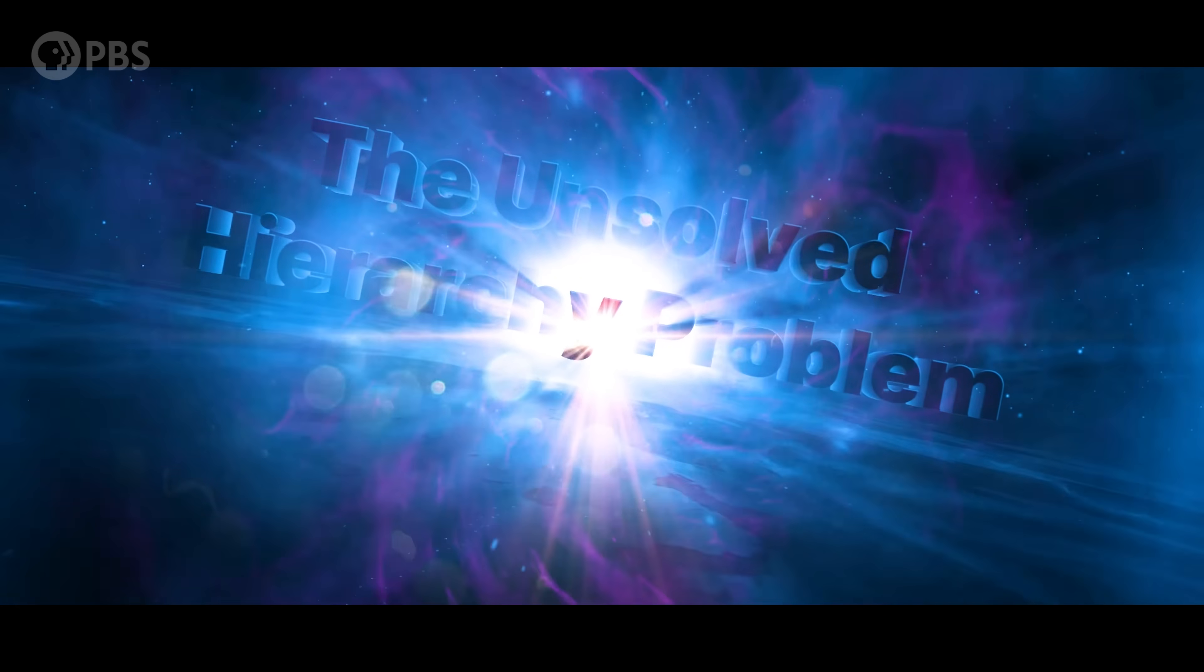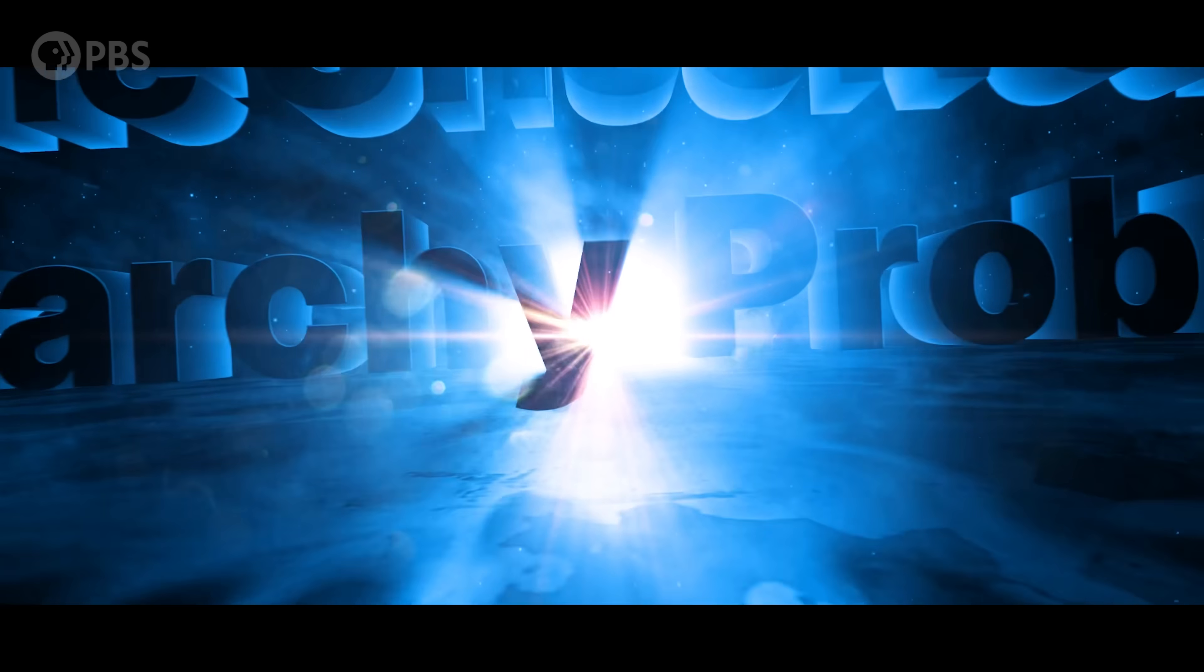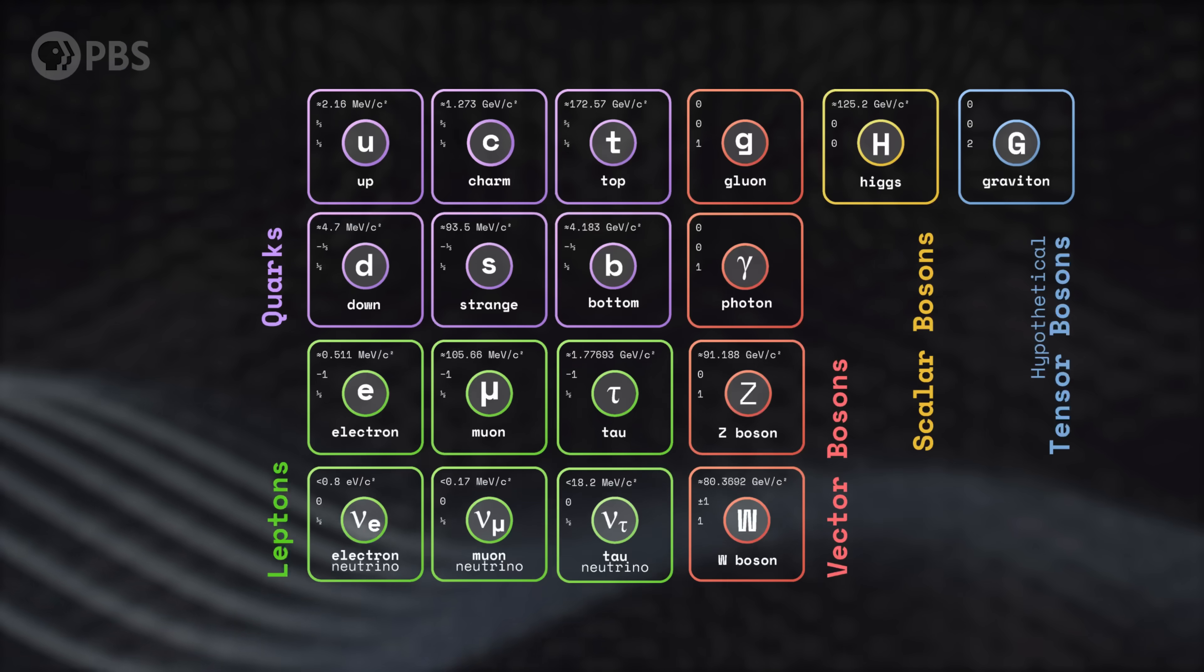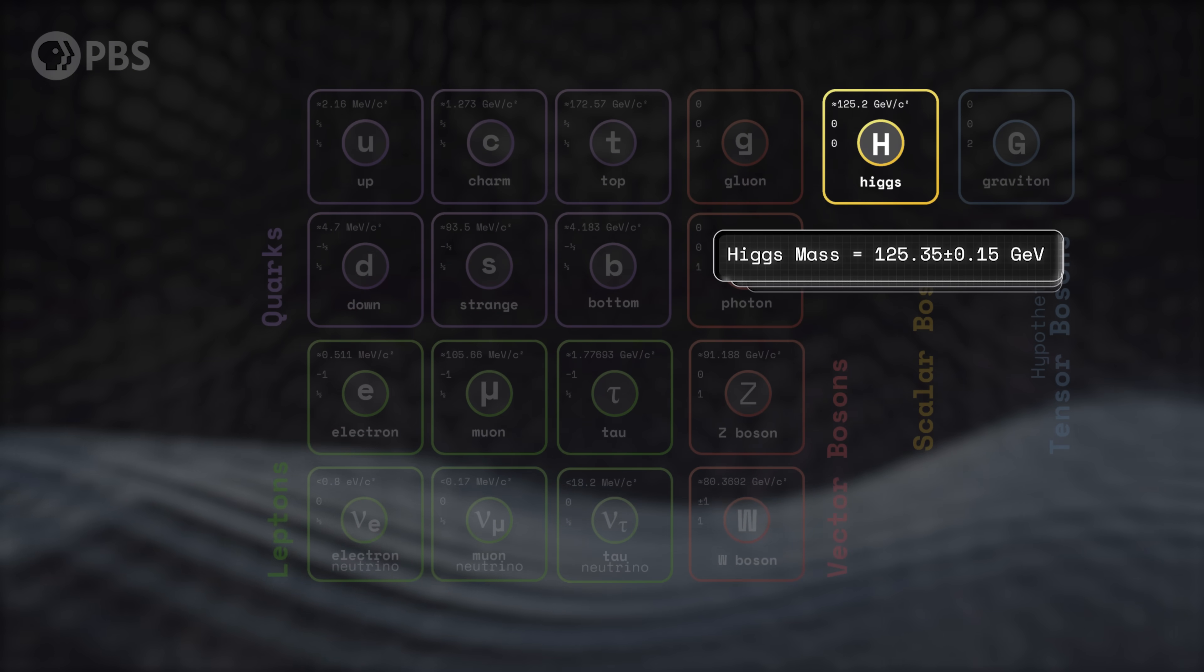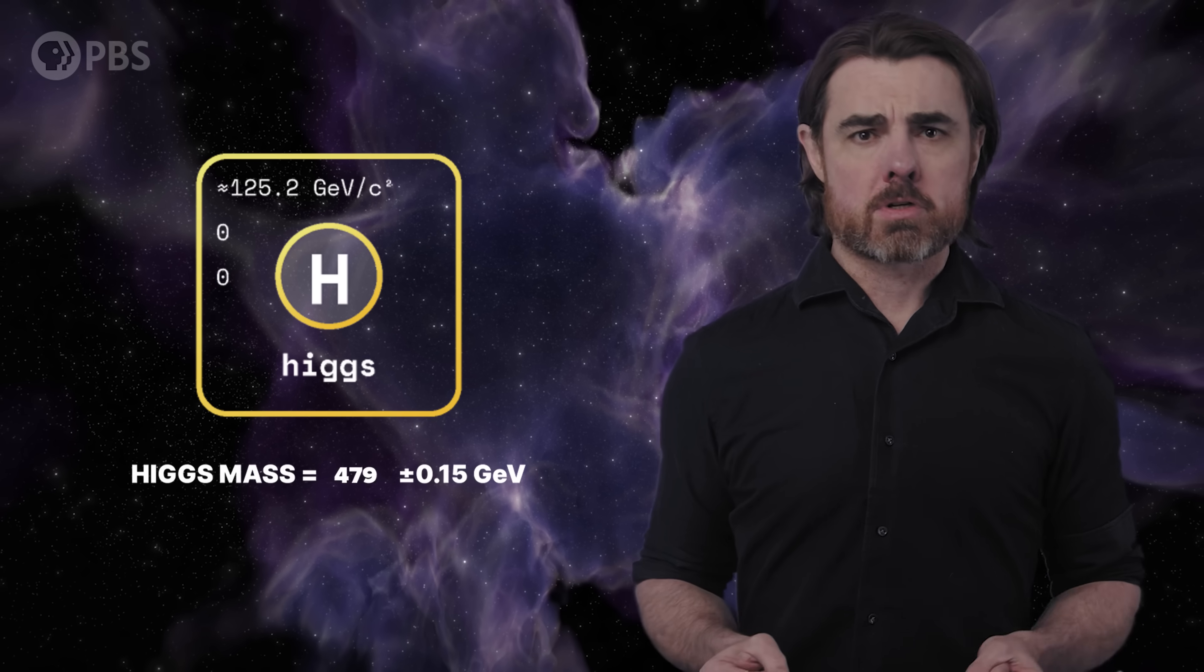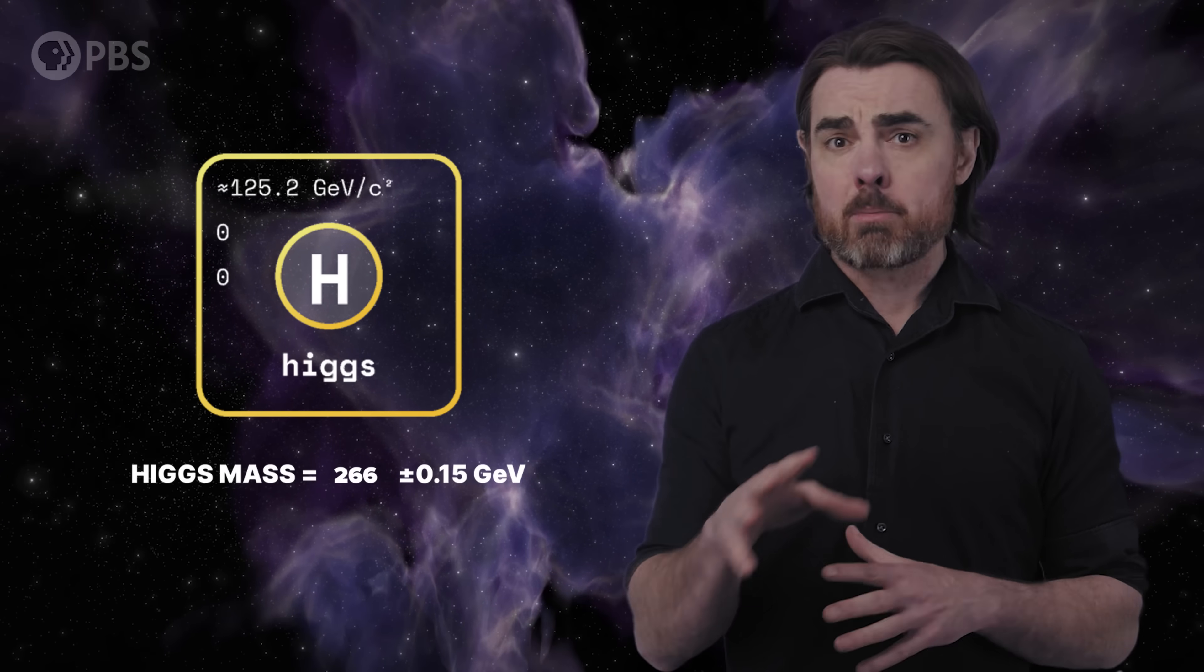Today's episode is an introduction to one of the most important problems in physics. It's the hierarchy problem, and it's important because its solution is going to lead us beyond our current theories. The hierarchy problem, put simply, is that we don't understand why the mass of the Higgs boson is so small. From our understanding of quantum field theory and the standard model of particle physics, interactions between the Higgs and the quantum vacuum should drive its mass up to enormous values.